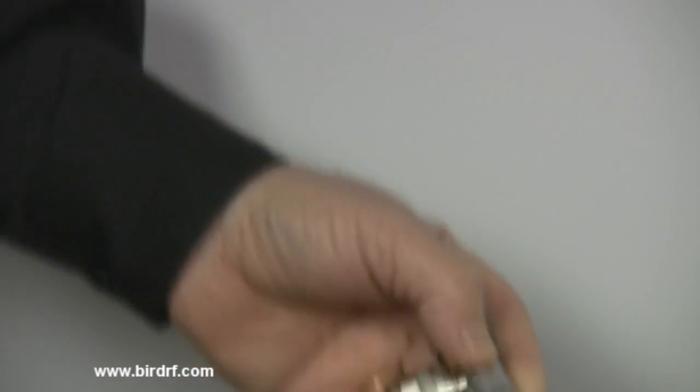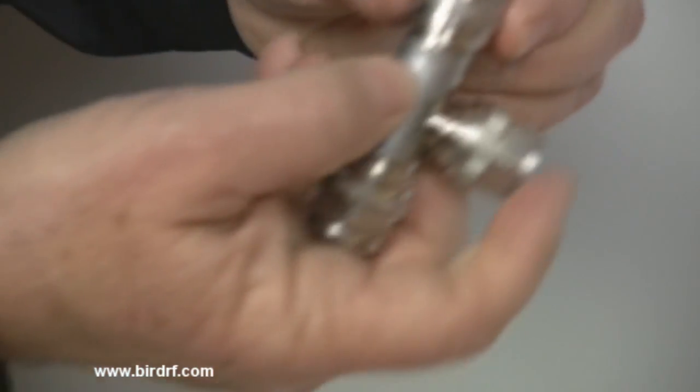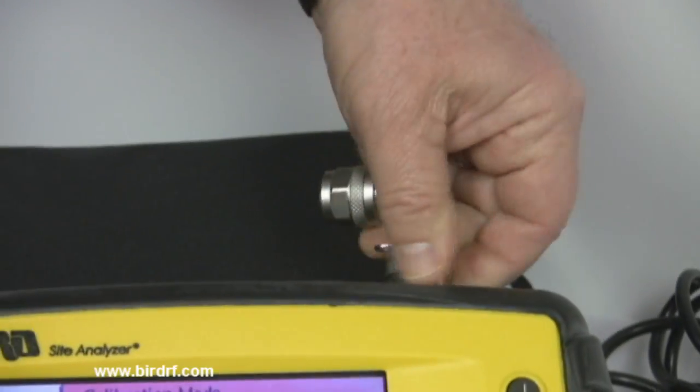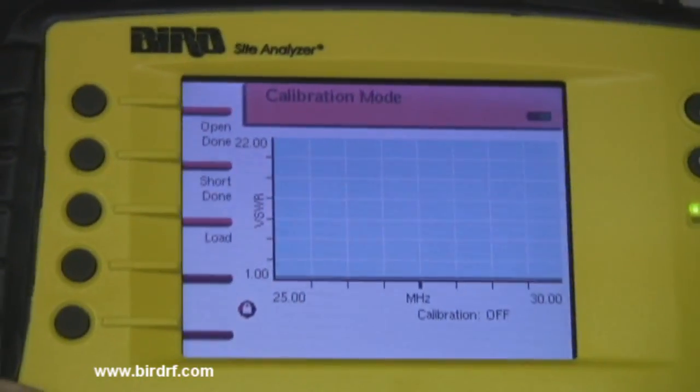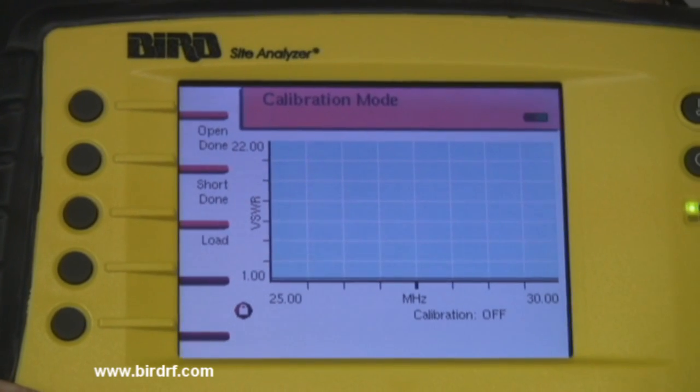The next step in the calibration process is the most important as we will set the dynamic range of the instrument. Attach the precision 50 ohm load connector to the cal combo test port of the SA.